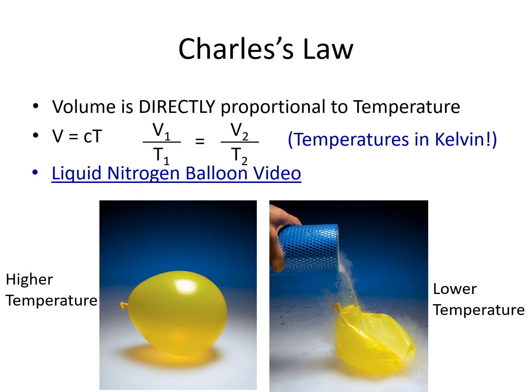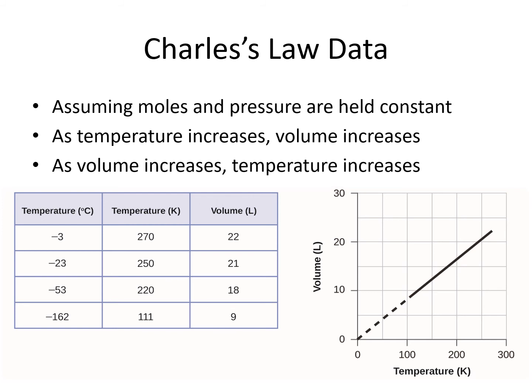That's the form of Charles' law we're likely to use. Again, temperatures must be in Kelvin, but volume can be in any unit as long as it's the same for both V1 and V2. I encourage you to click on the link in the slides for the liquid nitrogen balloon video. At a higher temperature, like room temperature, the balloon is fully inflated. But at a lower temperature, when we pour on the really cold liquid nitrogen, the balloon compacts — it crumples up because it's losing volume. At the lower temperature, its volume is decreased. Charles' law assumes that moles and pressure are held constant. So long as those two variables are held constant, temperature and volume can vary with each other in a linear way.